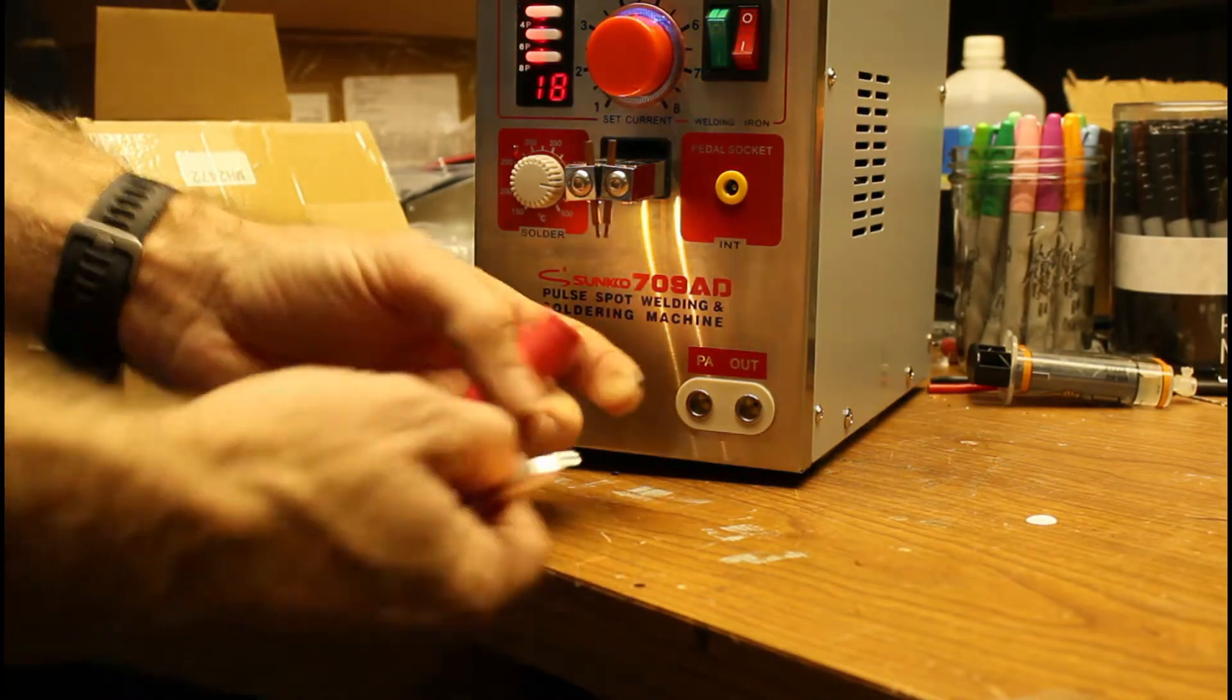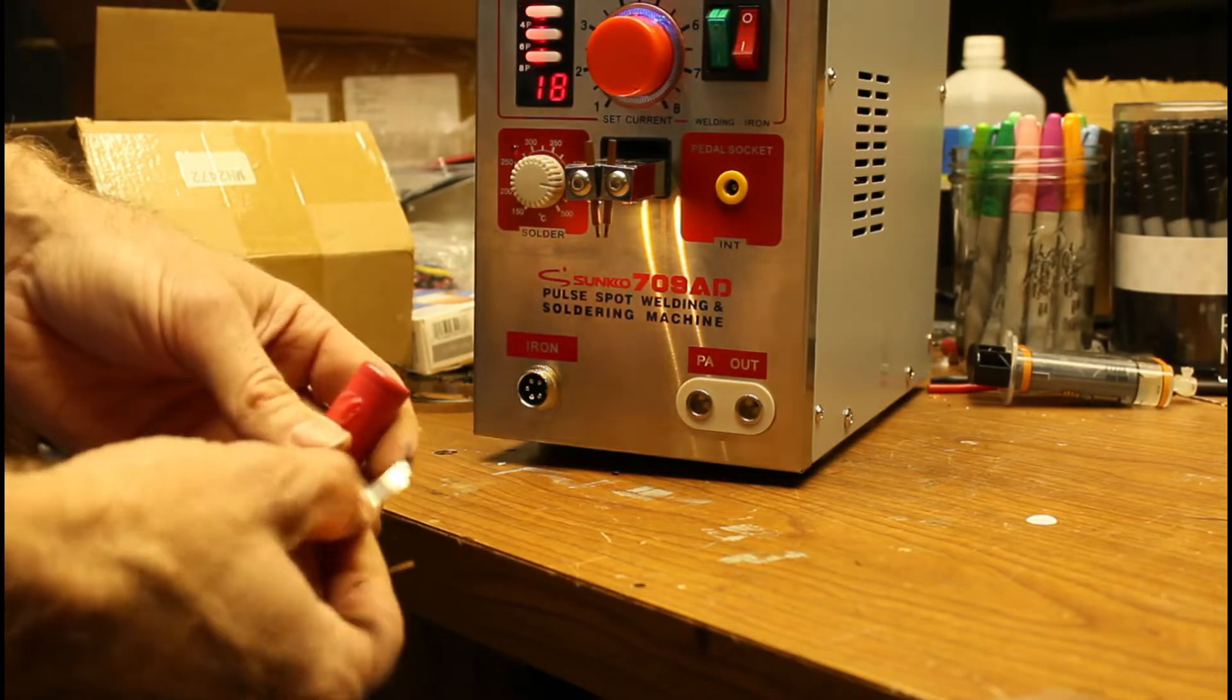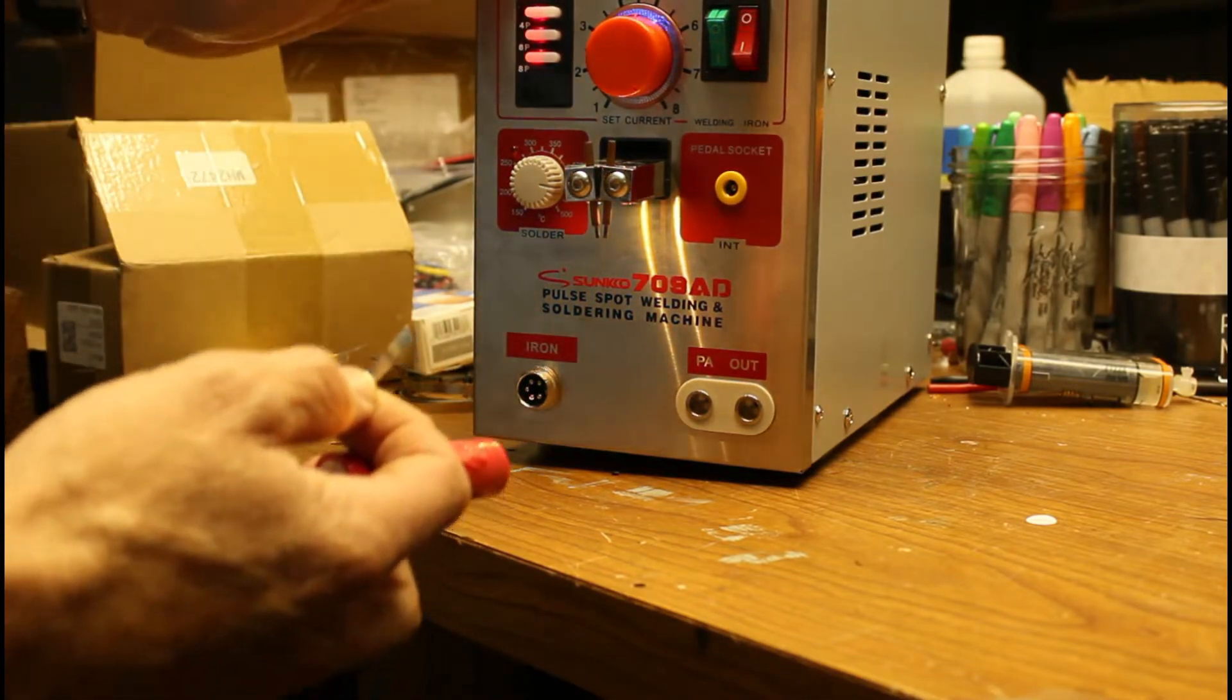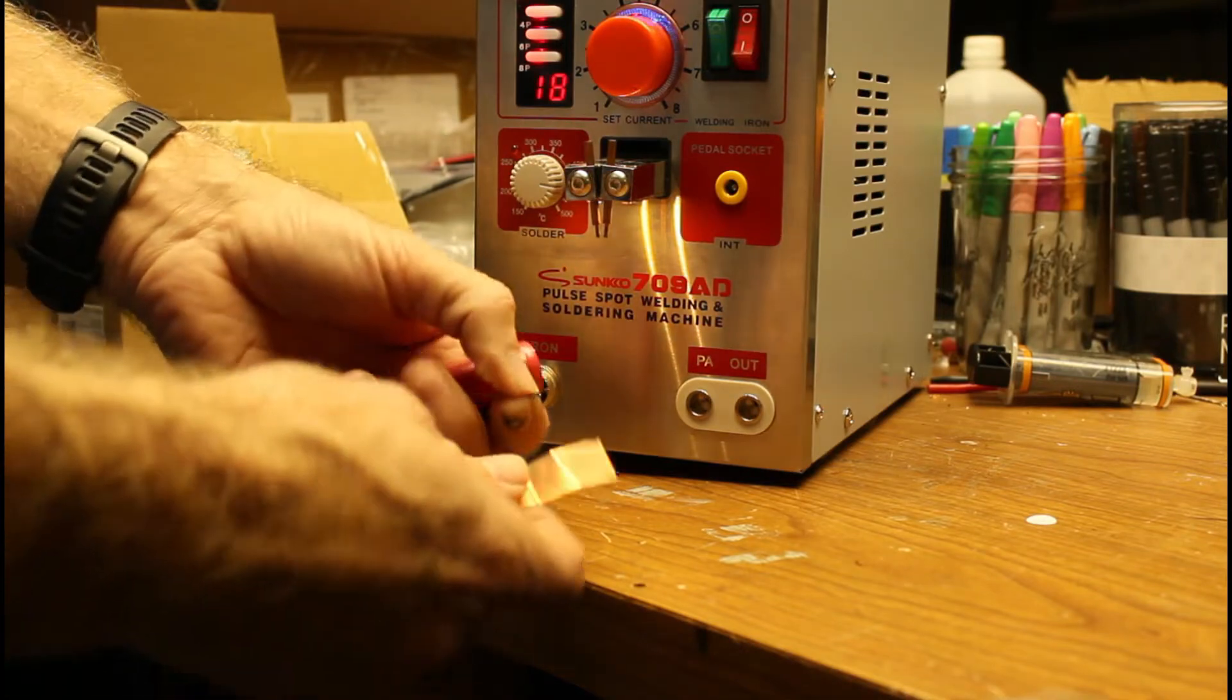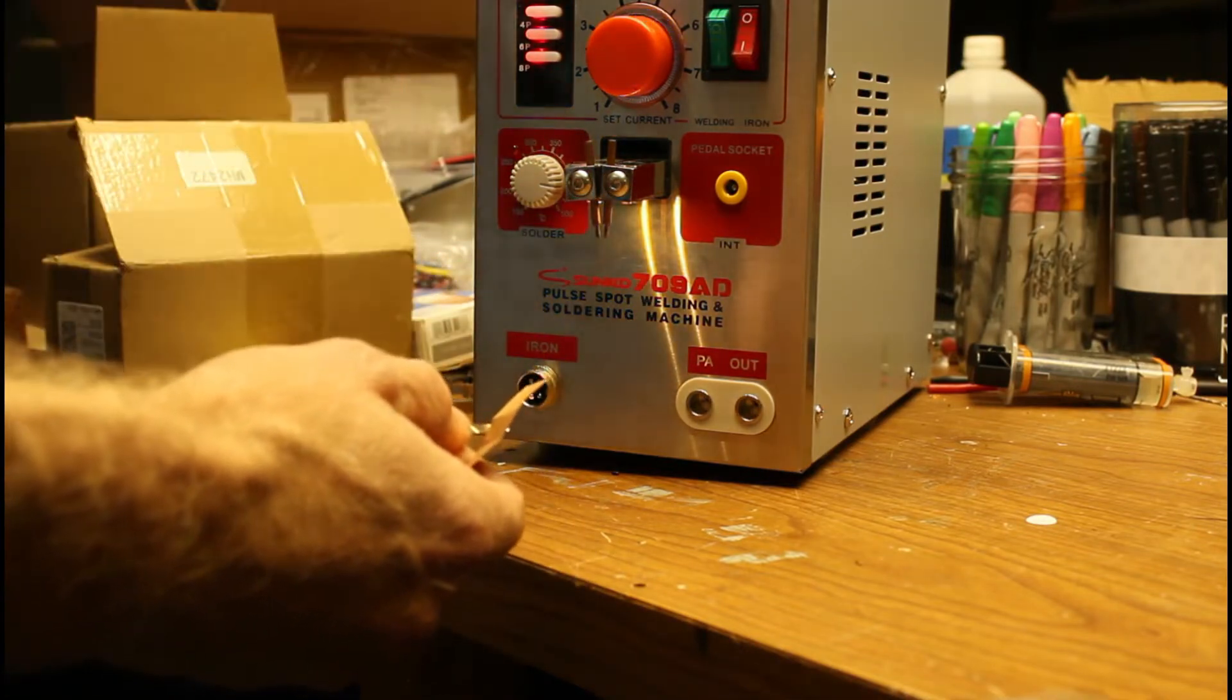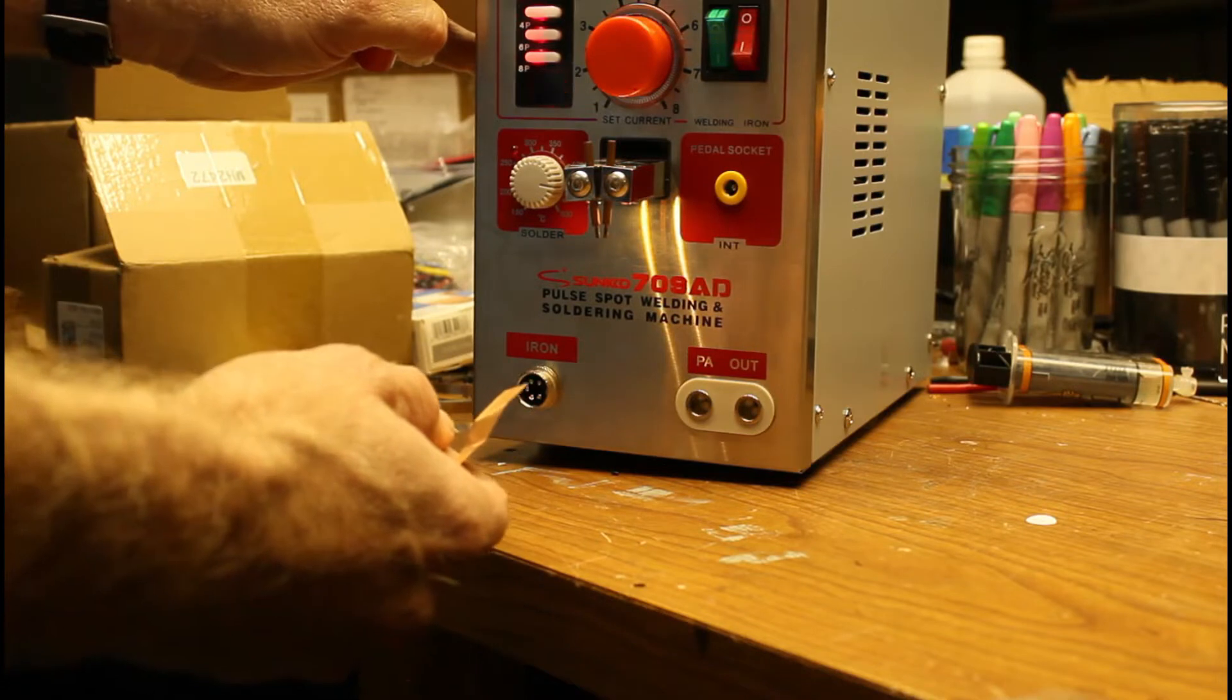Hey what's up guys welcome to ebike builds. I'm going to show you real quick that the Sunco 709 AD is capable of making the copper nickel welds. It's a little underpowered for this. Ideally you would want like a K weld or something like that but this machine will make this weld on thinner material.